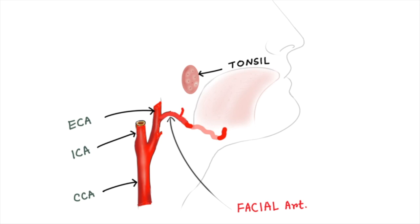The tonsillar branch ascends between the pterygoideus internus and styloglosus muscles and then along the side of the pharynx, perforating the superior constrictor muscle. It supplies the palatine tonsil and root of the tongue.